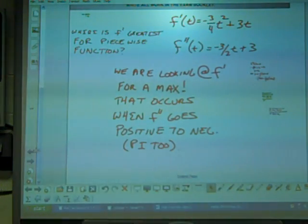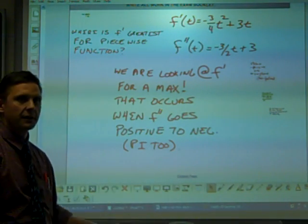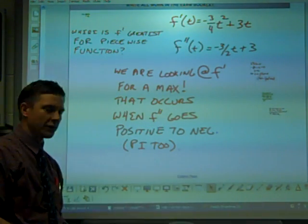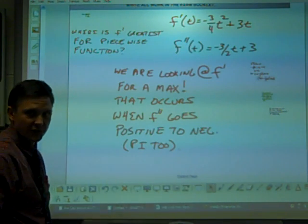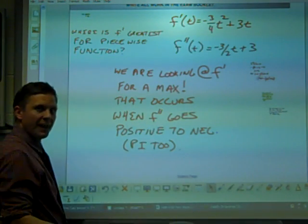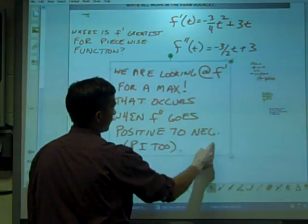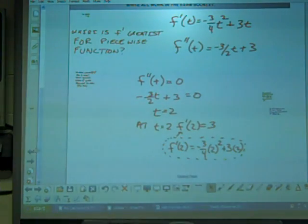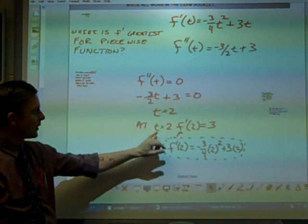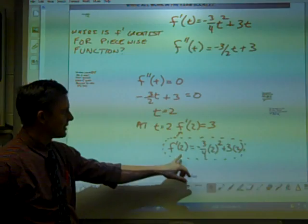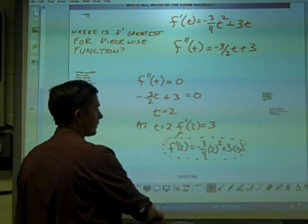We are looking at F' for a max. That occurs when, if we're looking for F' to be a max, that occurs when F'' goes positive to negative. And I always think of the curve. It's a point of inflection too in this case, but we're not so much worried about that. But again, we have to find this point. Well, if I'm going to find that point where it goes positive to negative, I am pretty interested in where it's going to be zero. So I'm going to back up and set this whole thing, F'', to zero. And when I do that, I get a value of T = 2. And I can quickly find the rate by plugging 2 into F'(2), and I'm going to get that that's 3 calories per minute squared.